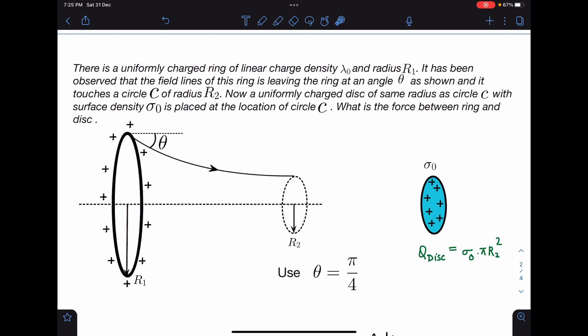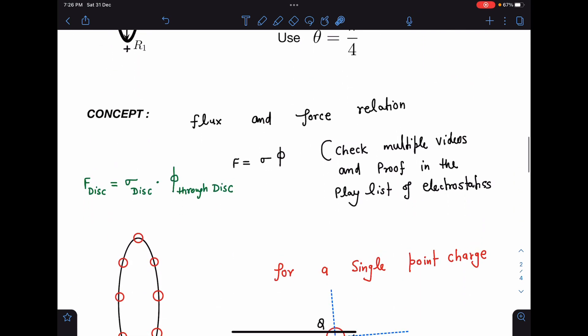Here is the problem statement. There is a uniformly charged ring of linear charge density λ₀ and radius r₁. It has been observed that the field lines of this ring are leaving the ring at an angle θ as shown, and it touches a circle of radius r₂. Now a uniformly charged disk of same radius as circle C and with surface charge density σ₀ is placed at the location of circle C. What is the force between ring and disk? In the original problem, θ is given as π/4. I have generalized it for general θ. Let's try this question.